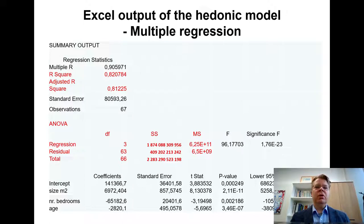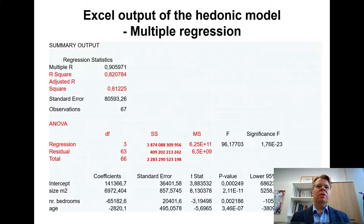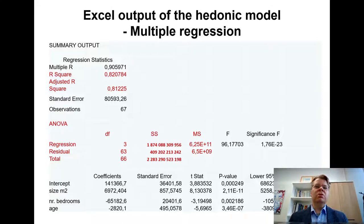Here is the Excel output of the regression model that we have considered before with the three explanatory variables. I have highlighted some of these elements in red. On the top part of this table, we have a so-called R-squared statistic and adjusted R-squared, highlighted in red. These statistics are both measures of the empirical fit of the model.